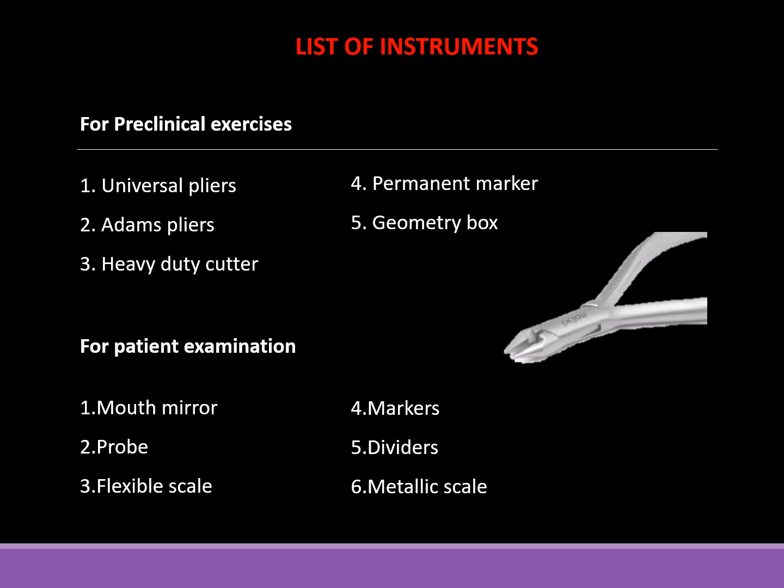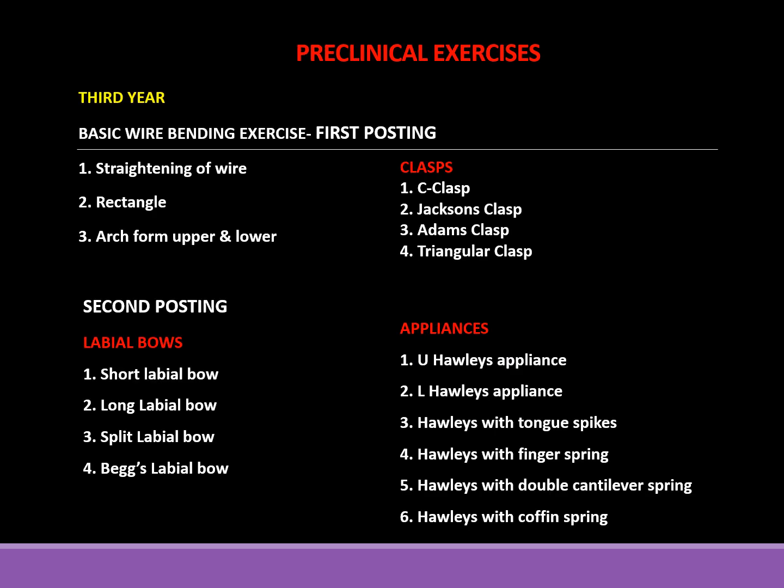The instruments you will need for preclinical exercises include universal pliers, Adam's pliers, heavy duty cutters, permanent marker, and a geometric box — especially a protractor and set squares. For patient examination, you'll need a mouth mirror, probe, flexible scale, markers, dividers, and metallic scale. Preclinical exercises in third year include wire bending, straightening of wire, rectangle and upper and lower arch forms, and clasps such as C-clasp, Jackson's clasp, Adam's clasp, and triangular clasp. The second posting covers four types of labial bows — short, long, split, and Begg's — and appliances including upper and lower Hawleys, Hawleys with tongue spike, finger spring, double cantilever spring, and coffin spring.